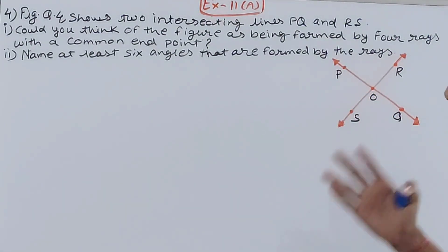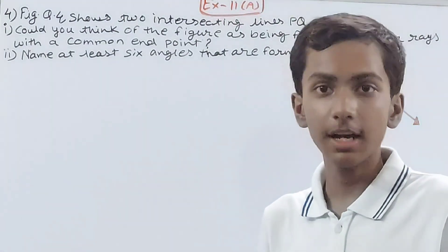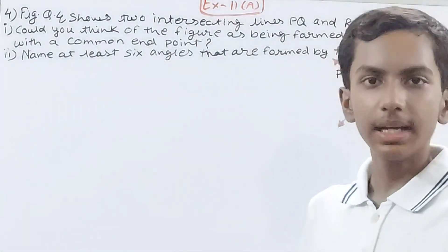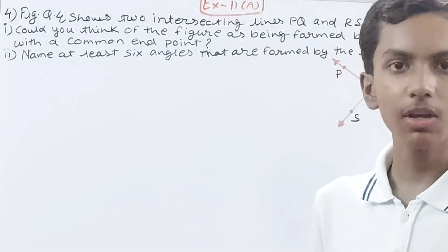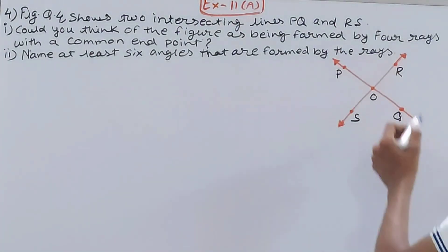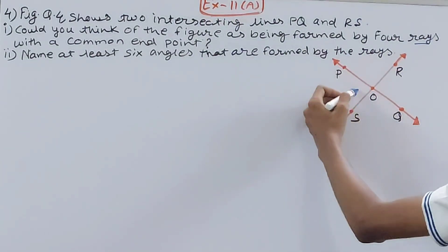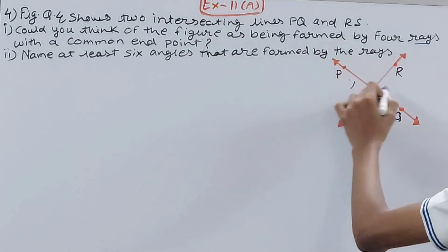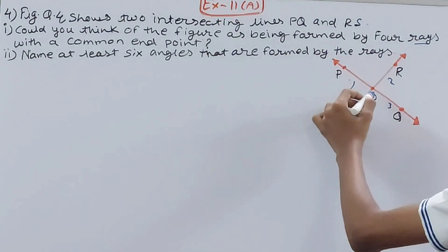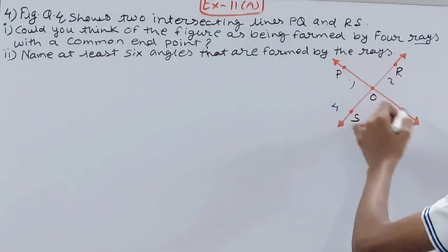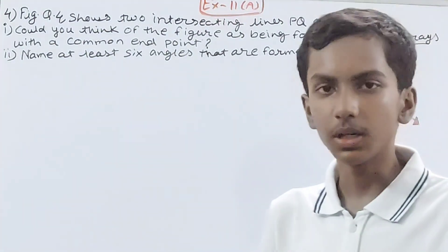Now we have to think: can we say this figure is formed by four rays having a common endpoint? Can you see this is your first ray, second ray, third ray, fourth ray? Four rays: OP, OR, OQ, OS. So four rays are forming this figure.